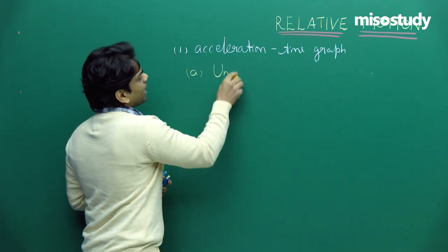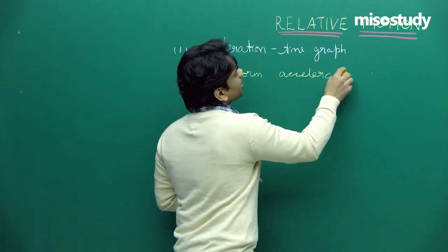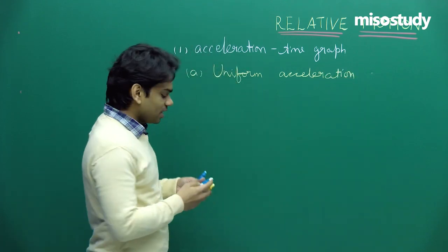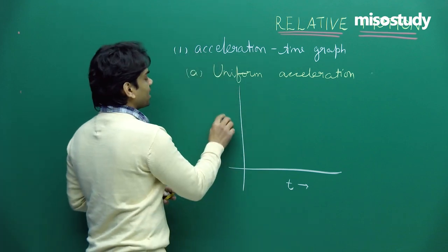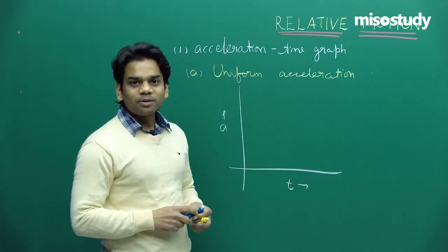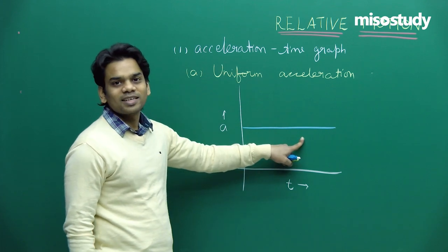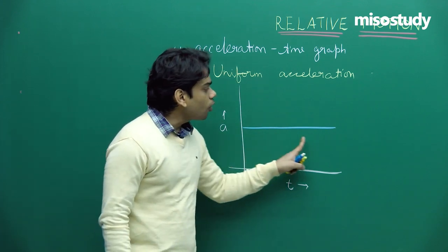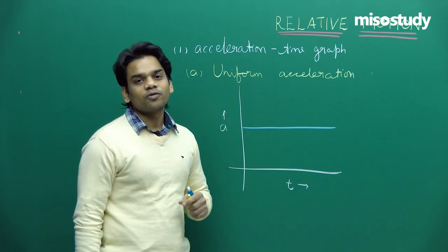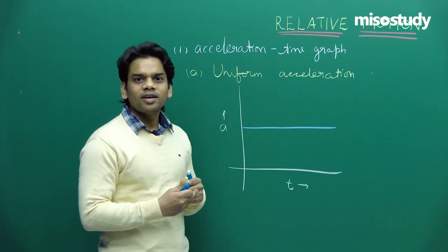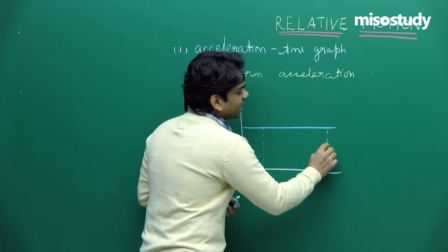For the case of uniform acceleration, the acceleration-time graph will be a straight line parallel to the time axis. On the x-axis we have time and on the y-axis we have acceleration. If acceleration is uniform, that means it is constant and there will be no change in acceleration. From the acceleration-time curve, we can obtain the change in velocity between two fixed instances of time.